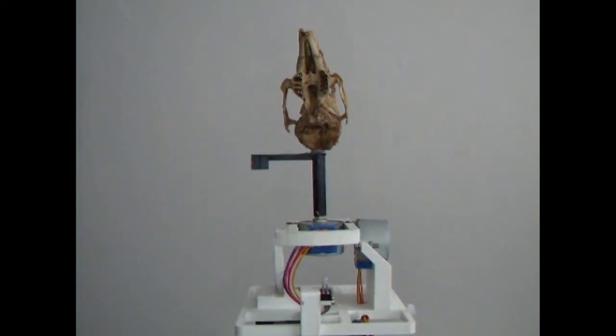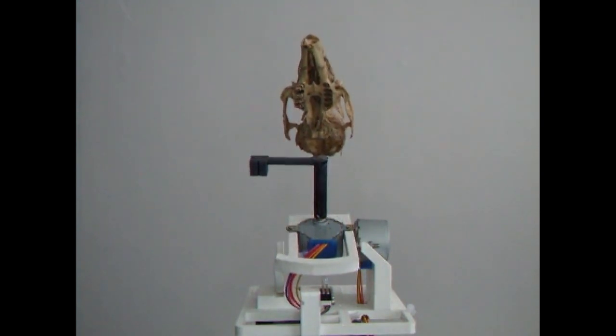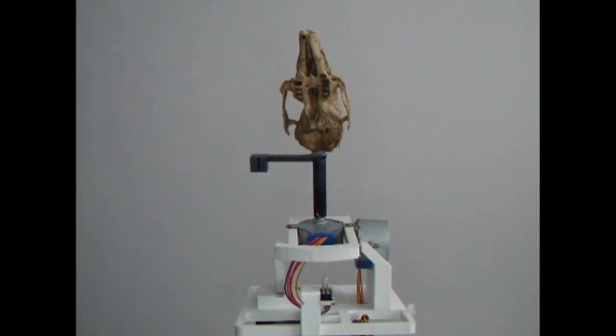And here it is, this is the jig that does the work. It turns the object around, taking pictures as it goes, then moves the object to a different vertical angle and repeats so you get an all-round view for the software.